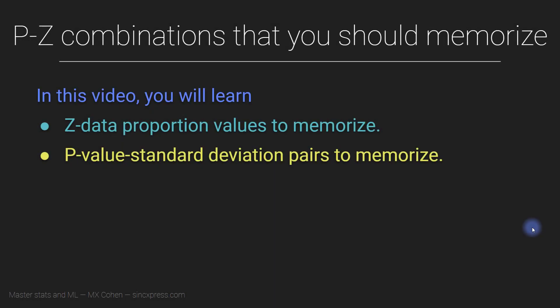Every distribution has an associated set of p-values because every distribution can be converted into a probability distribution. Some distributions are more important than others because they are used more often, and the most important distribution in all of statistics, maybe even all of the entire universe, is the normal distribution, also known as the bell curve, the Gaussian distribution, or the standard distribution. It has so many names because it's so important.